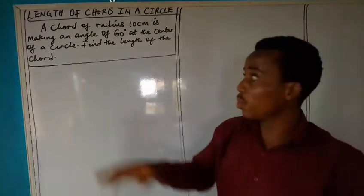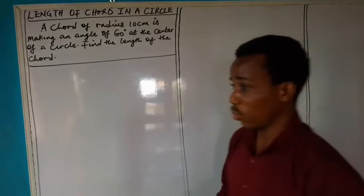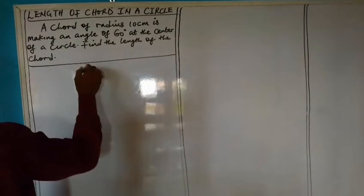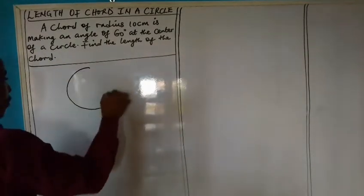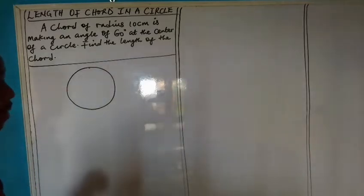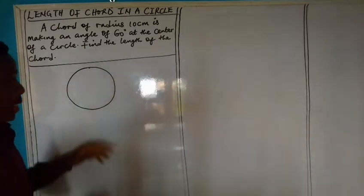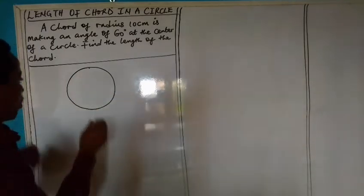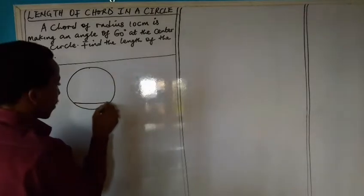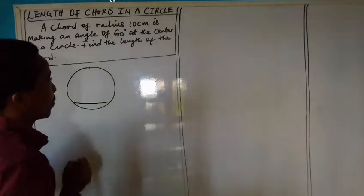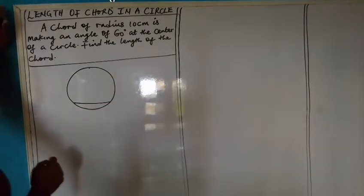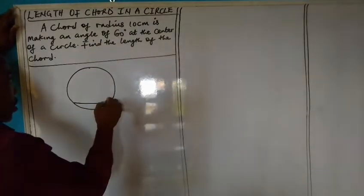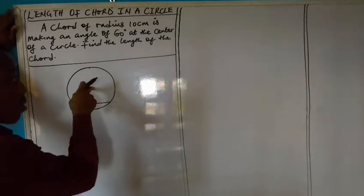I'm going to provide you with two ways in which you can do this. Let's start with the first way. We can start by drawing the circle. Remember that a chord is simply a line that does not pass through the center of a circle. So this is the chord. It has a radius of 10 cm, and it's making an angle of 60 degrees at the center.